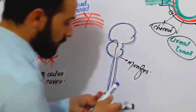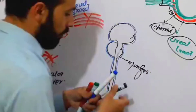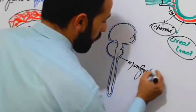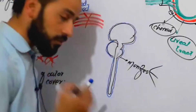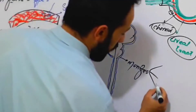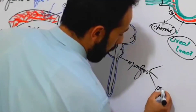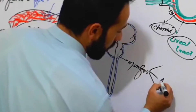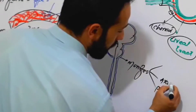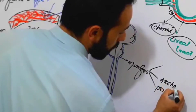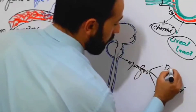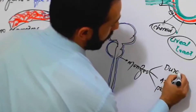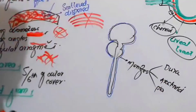Meninges is composed of three layers: the Pia mater, the Arachnoid, and the Dura mater.